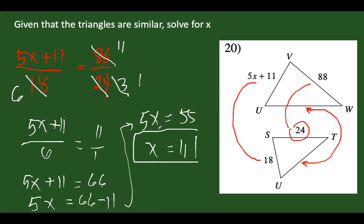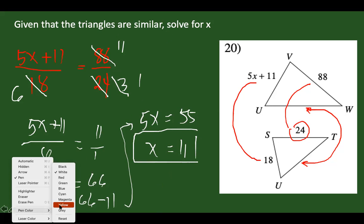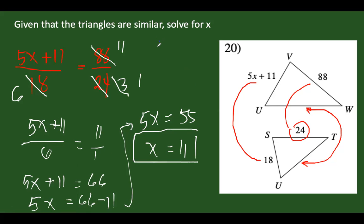Let's check: substituting x equals 11 into (5x plus 11) over 18 gives (55 plus 11) over 18, which is 66 over 18. Simplifying by 6 gives 11 over 3 — which equals our simplified ratio of 11 over 3. Therefore our answer is correct: x equals 11.